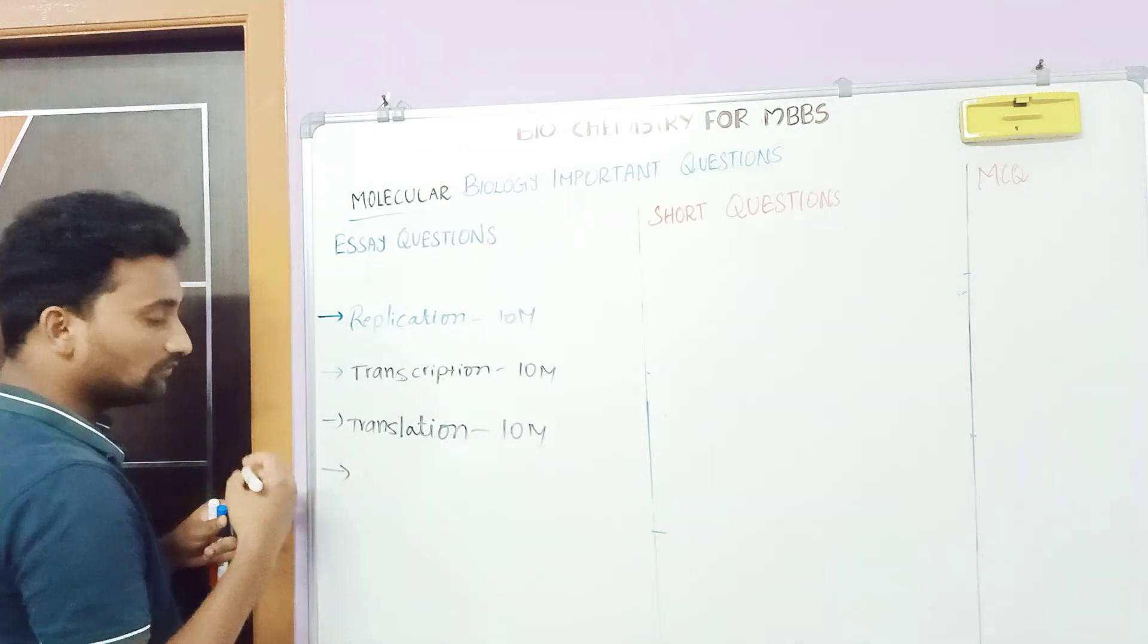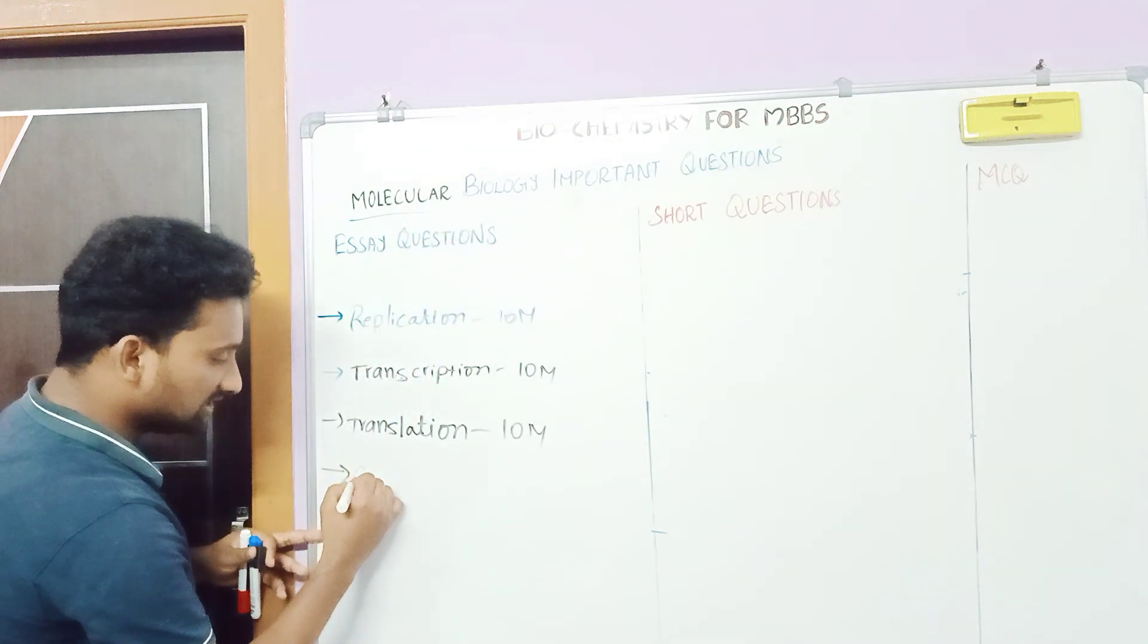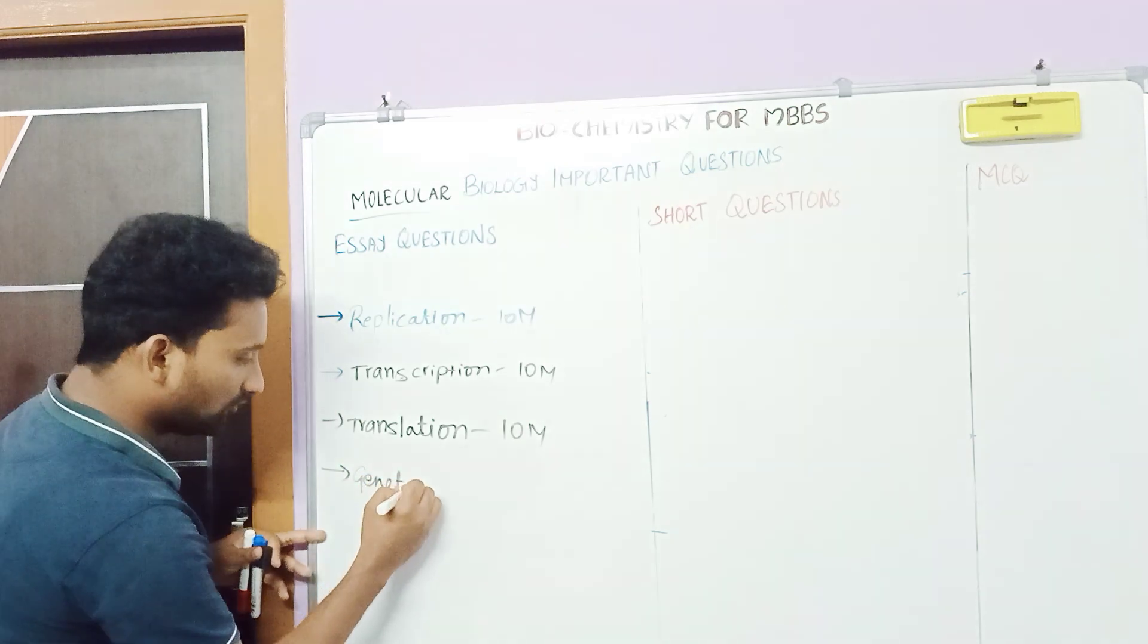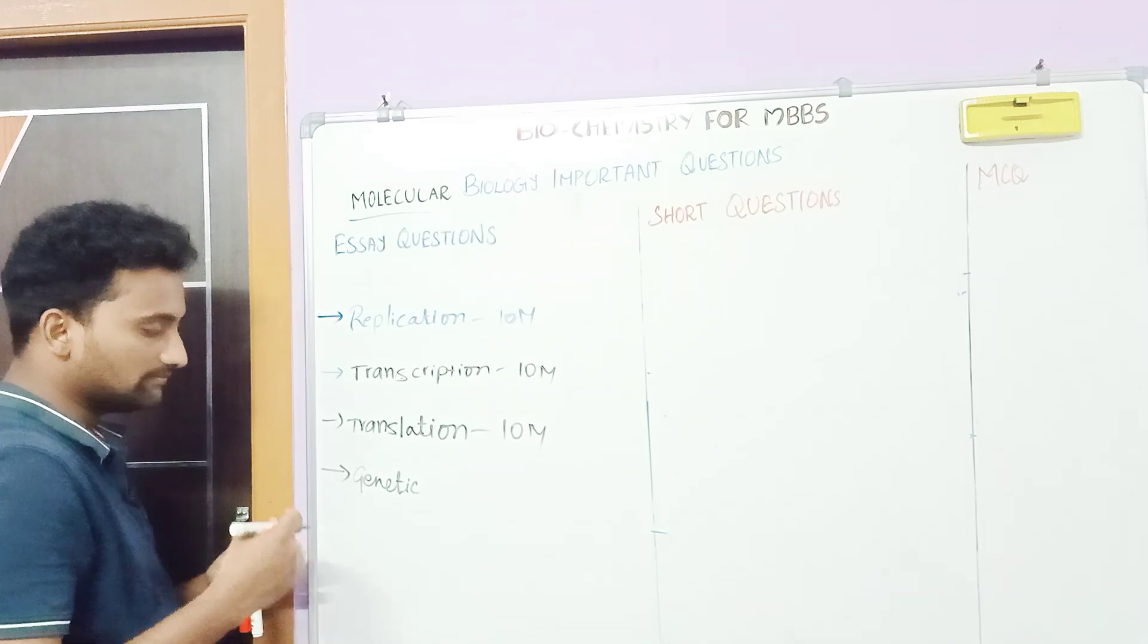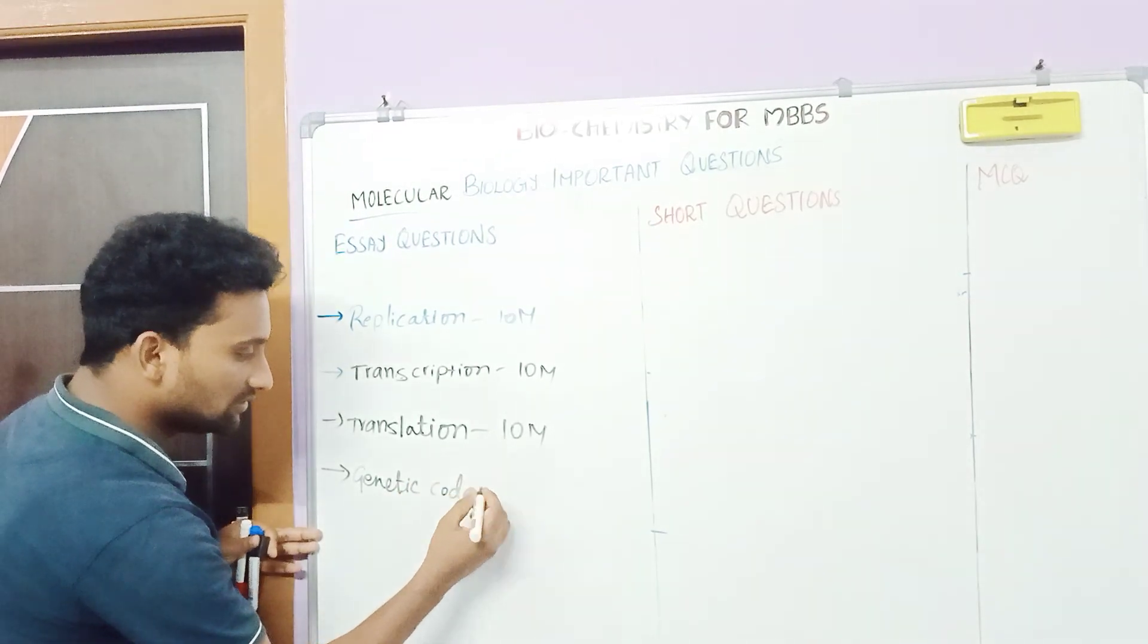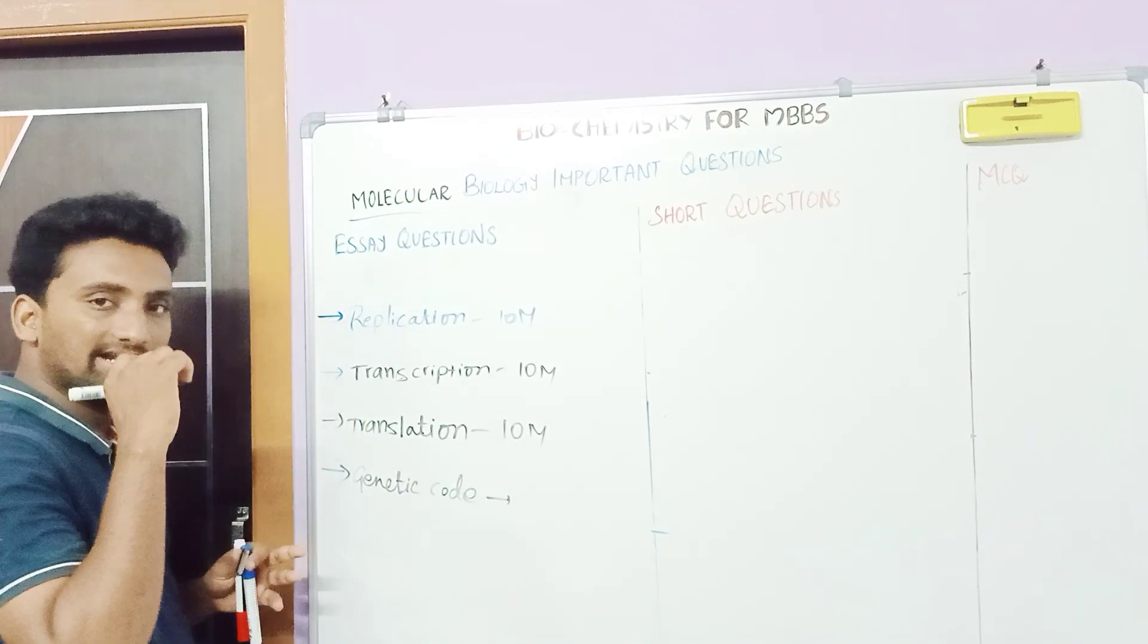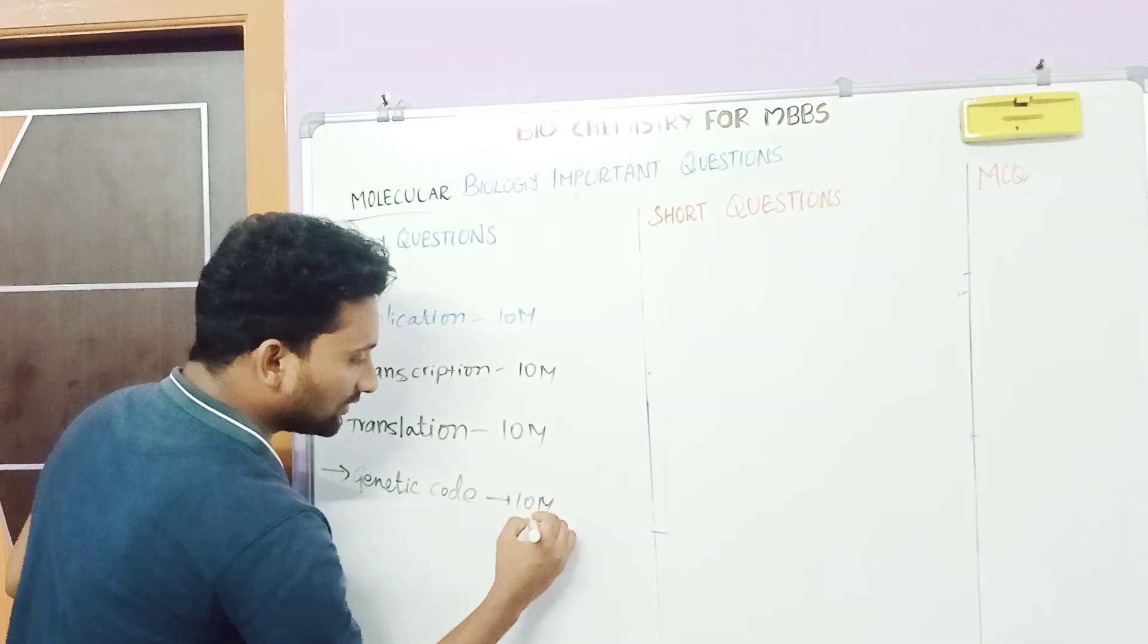And the last one is from molecular biology: genetic code. Most of the universities will not pass genetic code in essay questions, but here in our university genetic code is also one of the essay questions. Many times asked in previous exams, previous university exam papers. So don't leave this one.